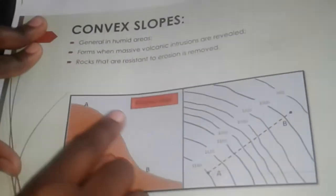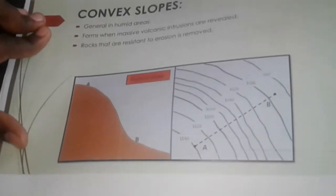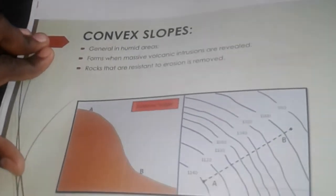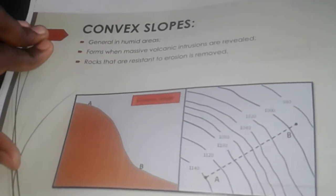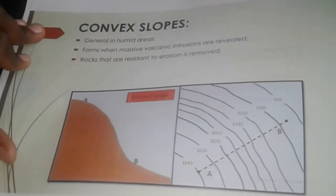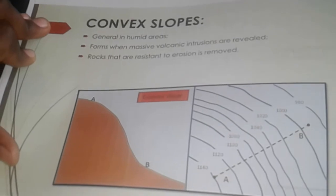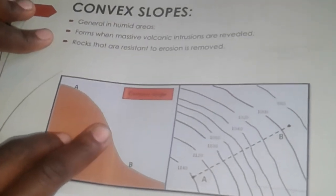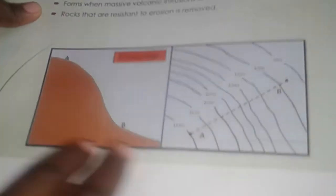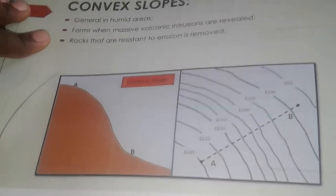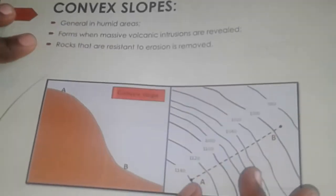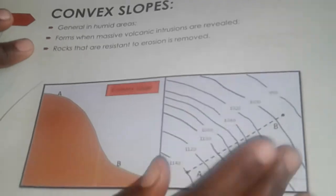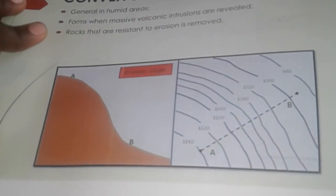A convex slope is the opposite of concave. With a convex slope, the upper layers are steeper and as you go down it becomes more gentle. You can see the contour lines are close together on the upper part; as you go down they become more spaced. This is what we call the convex slope.